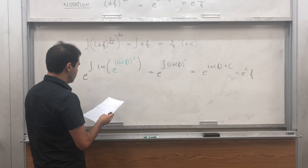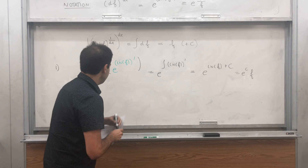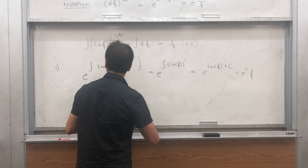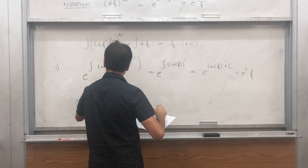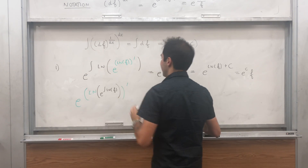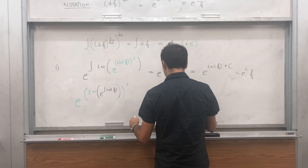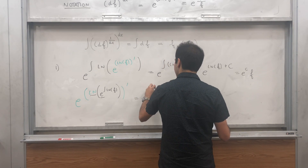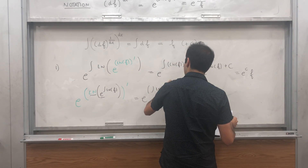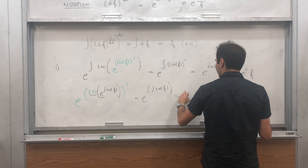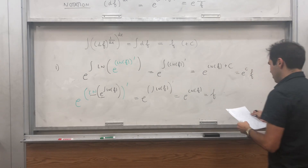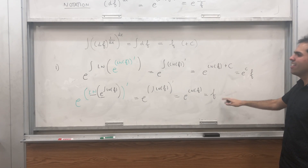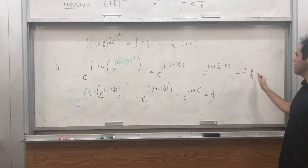Now let's do the opposite: what if you do the product derivative of the product integral? We get e of the derivative of ln of the product integral, which is e of the integral of ln of f dx. Then ln of e cancels out, and we get e of the derivative of the integral of ln of f, but the derivative of the integral is just the function, so e of ln of f, and that is f. Indeed, the product derivative of the product integral is the function itself, and the product integral of the product derivative is the function times some constant.